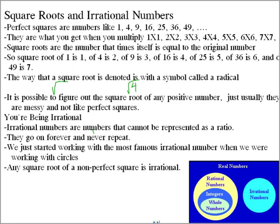Square roots are the number that times itself is equal to the original number. So the square root of 1 is 1, of 4 is 2, of 9 is 3, of 16 is 4, and so on.